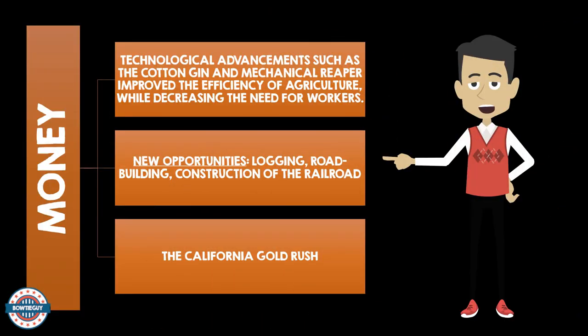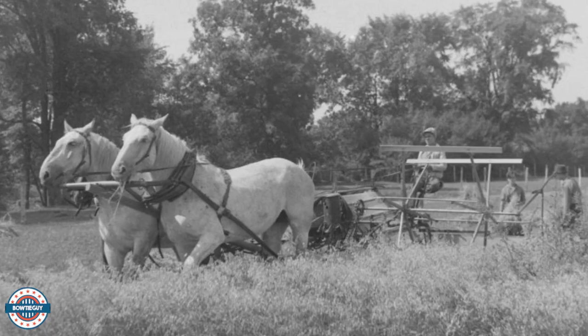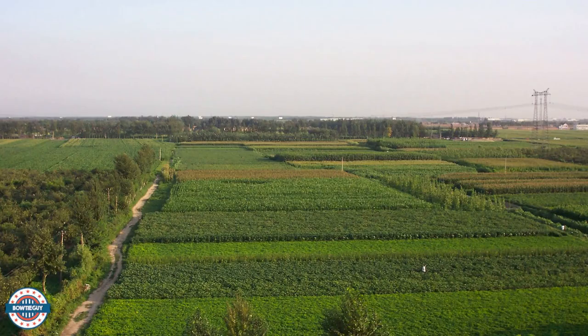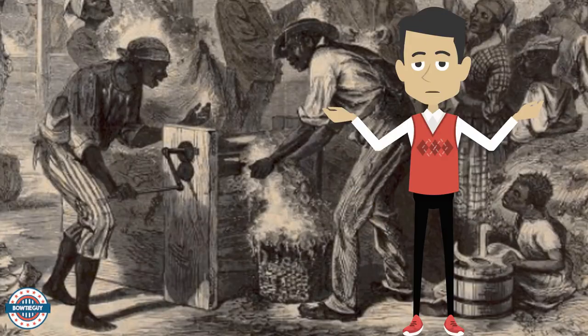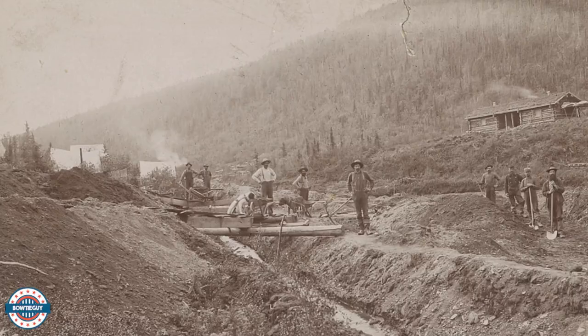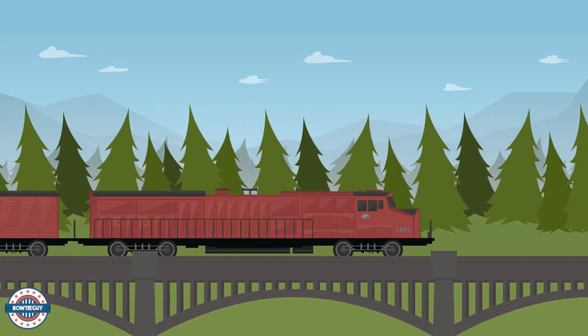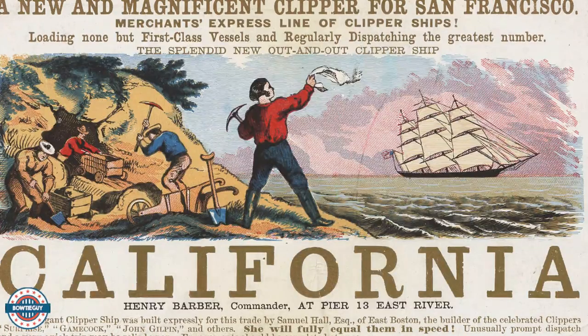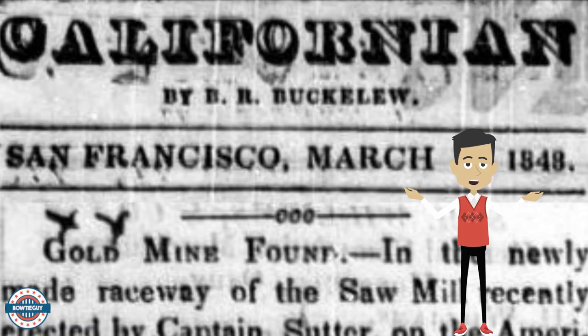Money and opportunity were motivating factors for migrating pioneers out west. The technological advancements such as the cotton gin and the mechanical reaper improved the efficiency of agriculture while decreasing the need for workers. New opportunities included logging, road building, and the construction of the railroad. The California gold rush and its prospect of riches motivated many.